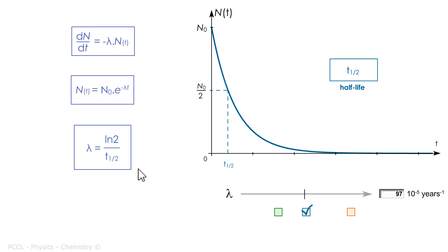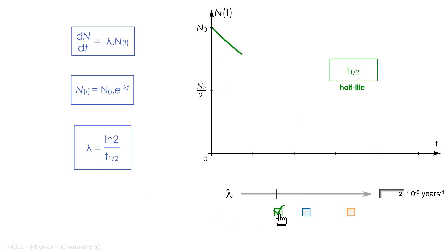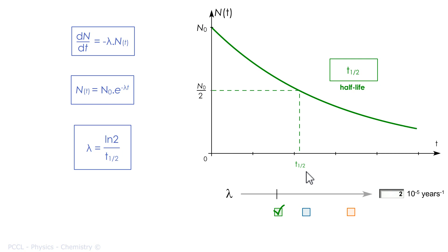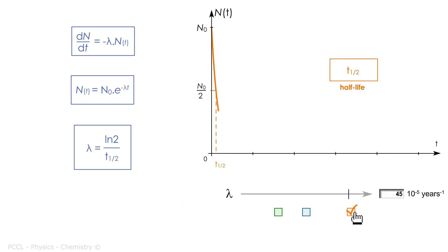Here is your little card. I have displayed a slider at the bottom to modify lambda, so that you understand that lambda and half-life do not vary the same way — they vary inversely. If I take a smaller decay constant, I will have a greater half-life. If I instead take a larger constant, I get a smaller half-life. They are inversely proportional.